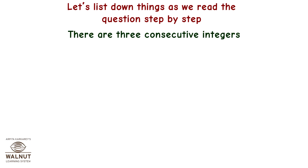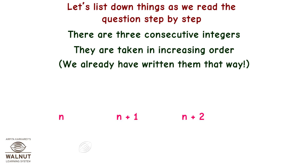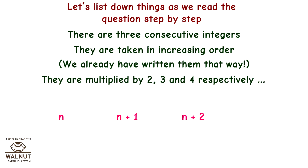There are three consecutive integers: n, n plus 1, and n plus 2, taken in increasing order. They are multiplied by 2, 3, and 4 respectively.